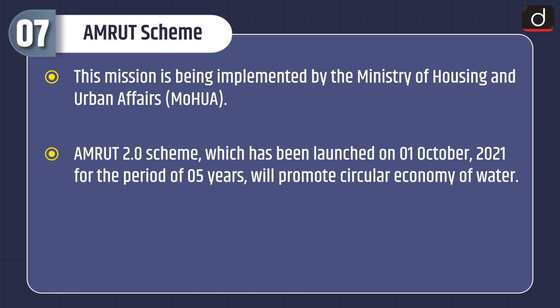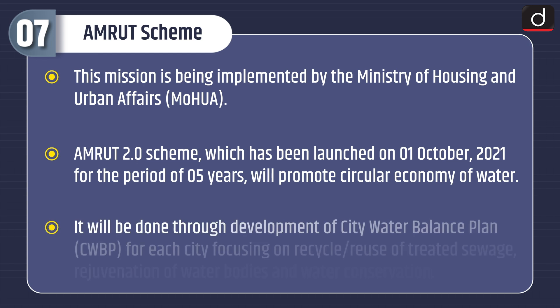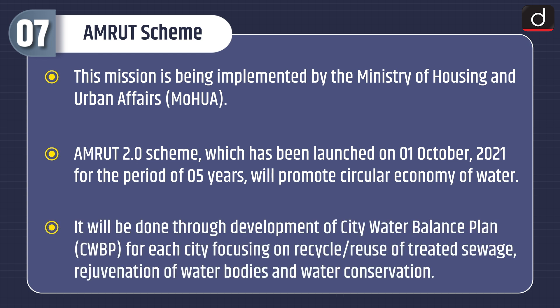AMRUT 2.0 scheme, which was launched on 1st October 2021 for a period of five years, will promote circular economy of water. It will be done through development of a city water balance plan for each city, focusing on recycling and reuse of treated sewage, regeneration of water bodies, and water conservation.